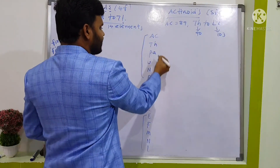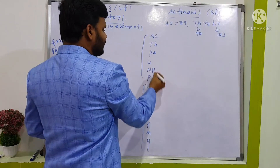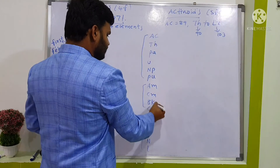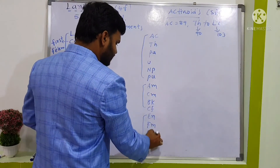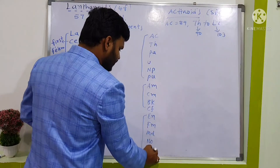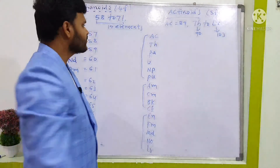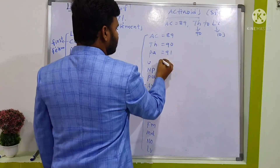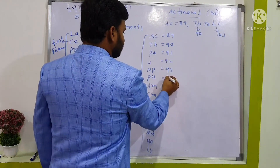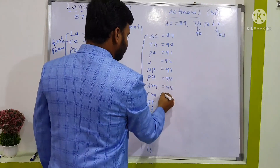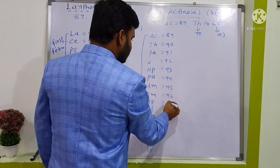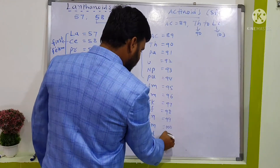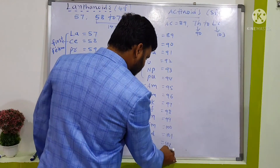In the mnemonic ATP UNP ACBC E FM N L: A = actinium, T = thorium, P = protactinium, U = uranium, N = neptunium, P = plutonium, A = americium, C = curium, B = berkelium, C = californium, E = einsteinium, F = fermium, M = mendelevium, N = nobelium, L = lawrencium. Actinium is atomic number 89, thorium 90, and so on through to lawrencium at 103.